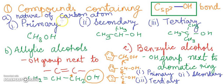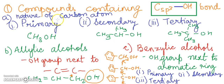First we have compounds containing the carbon atom with sp3 hybridization where the OH group is attached. Here we have three types of compounds: those classified on the basis of the nature of the carbon atom — namely primary, secondary, and tertiary alcohols — and also allylic alcohols and benzylic alcohols.